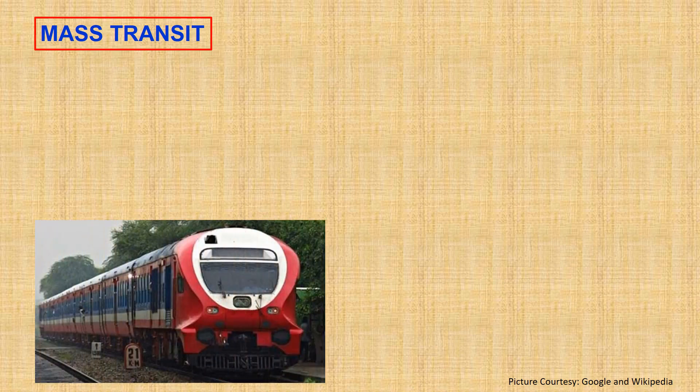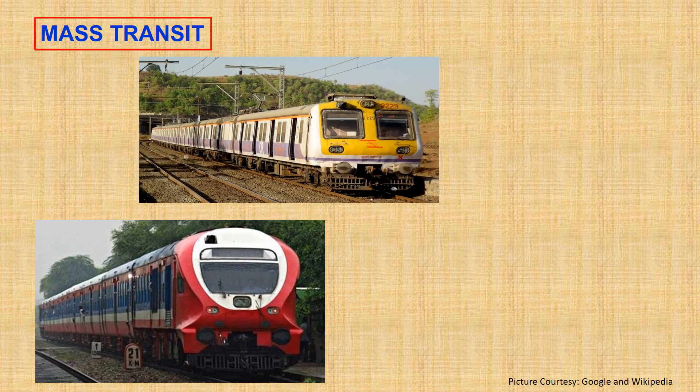Coming to EMU units: EMU units are trains with fixed composition. The cars are assembled in defined numbers and positions, and they cannot be separated. They are used exclusively for transporting passengers. Usually the distances covered are fairly long, and max speed can reach 160–200 km/h.